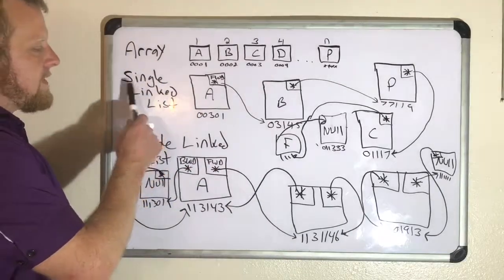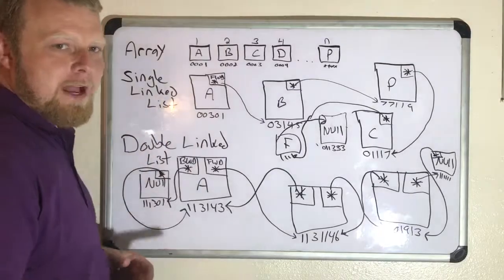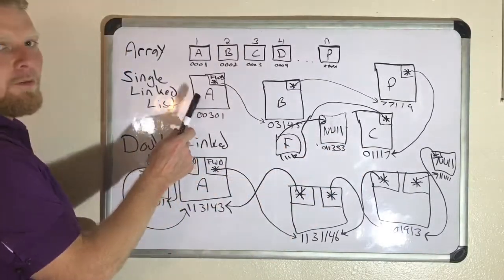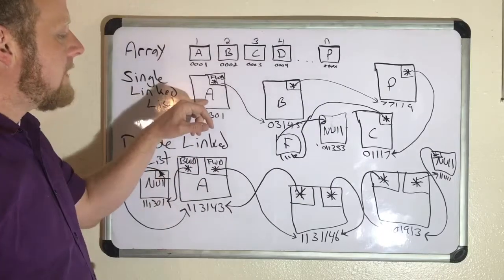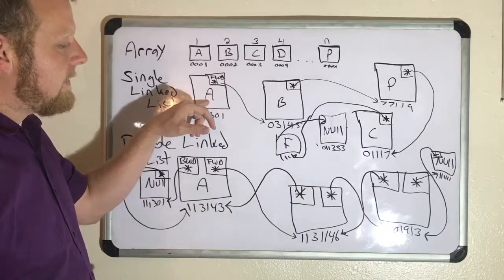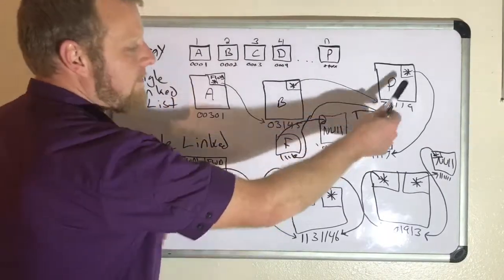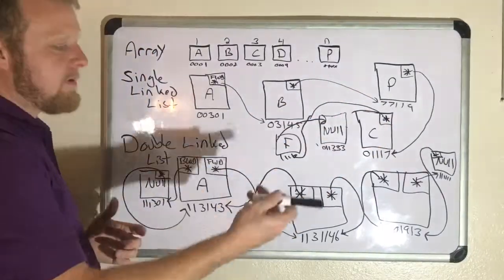One thing that is missing from the single linked list is you can't traverse backwards. So every time you want to try to find something, you have to start at the very beginning. Now technically, you probably could have kept track of the end as well, but you still can't traverse backwards. There's no pointer that points backwards.